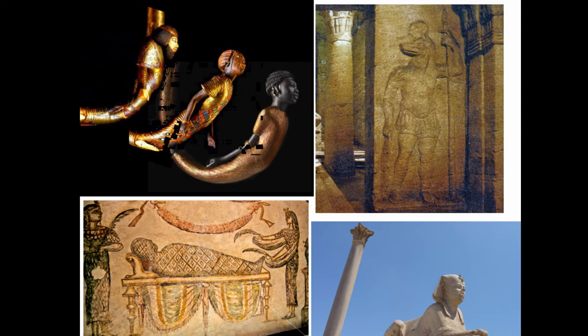They took over half of the country for at least 100 years until the city of Thebes rebelled against them. The Theban royal house polity repelled them, and the sovereignty of Egypt prevailed with the strong native polities that regained control of the country.